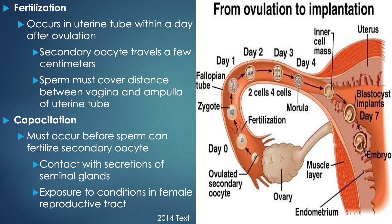HCG — human chorionic gonadotropin — is the standard thing tested in all pregnancy tests, whether urine or blood. At day four the conceptus is not yet implanted. However, moving toward day seven, we now have a blastocyst that implants in the wall of the uterine lining and an embryo begins to form. Fertilization is defined as what occurs in the uterine tube or fallopian tube within a day of ovulation.